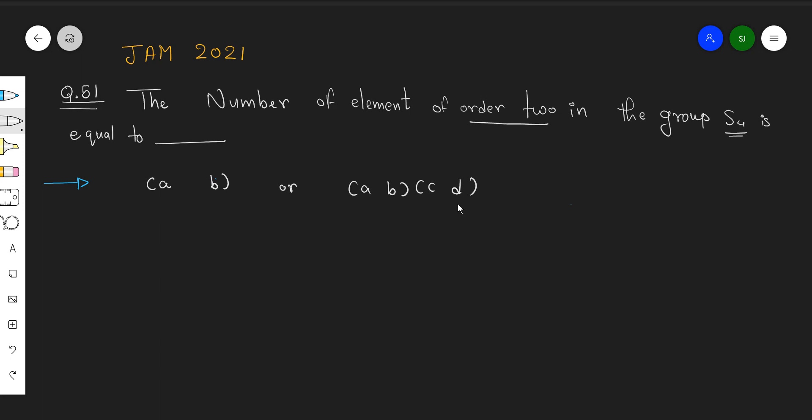Whatever we are learning now, the same idea could be generalized for any other question. Suppose we ask the number of elements of order 3 inside S5, number of elements of order 5 inside S6. The same idea could be generalized. Since the order is 2, it could be either AB or ABCD.